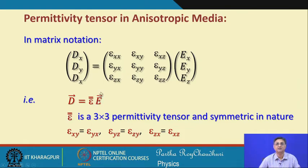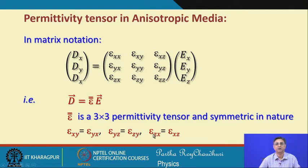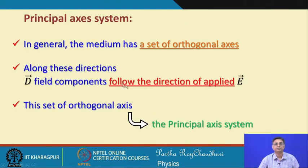This epsilon tensor is a 3×3 permittivity tensor and it is symmetric in nature. That means ε_xy = ε_yx, ε_yz = ε_zy, and ε_zx = ε_xz. We will find many interesting applications using this particular symmetry property.